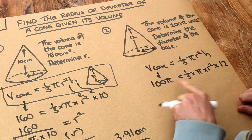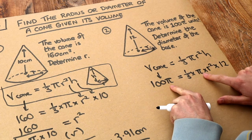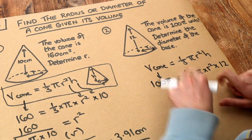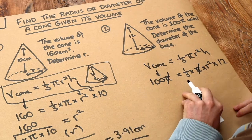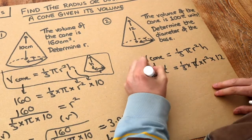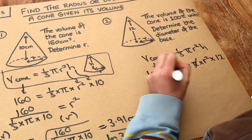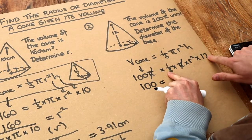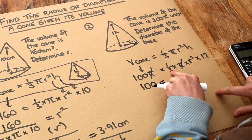Notice this time we've got a pi on both sides of the equation, so we could divide both sides by pi. Let's just cross it out to get rid of it. Then I'm going to tidy up a bit on the right hand side. One third times 12 is just 4, so we have 4 r squared.